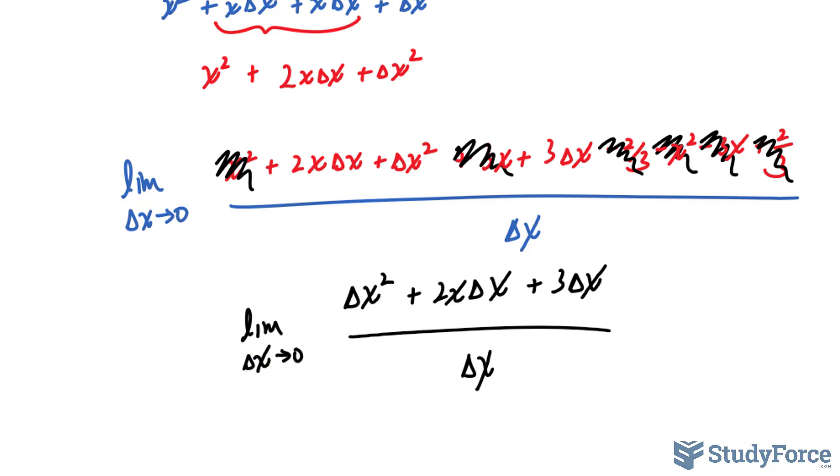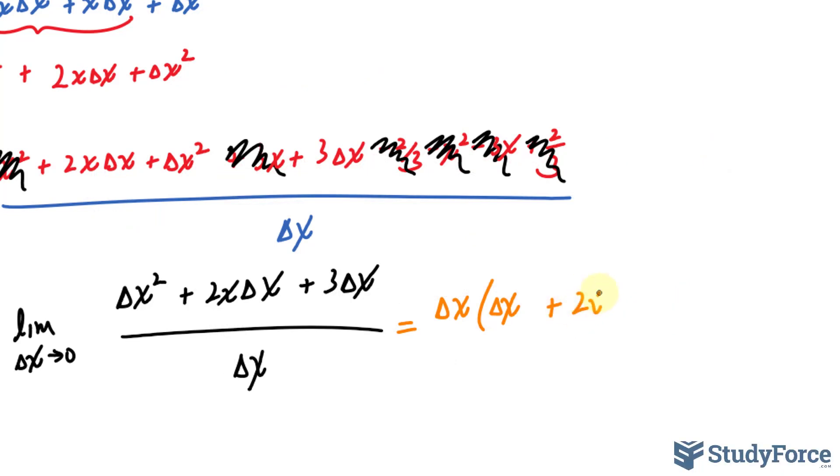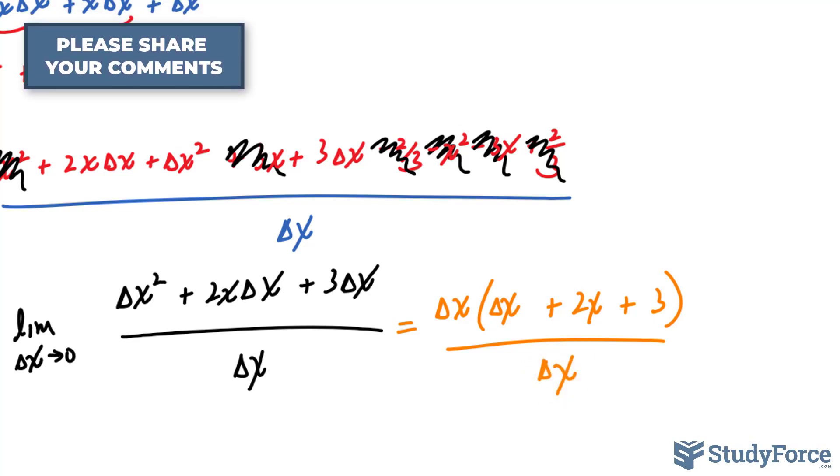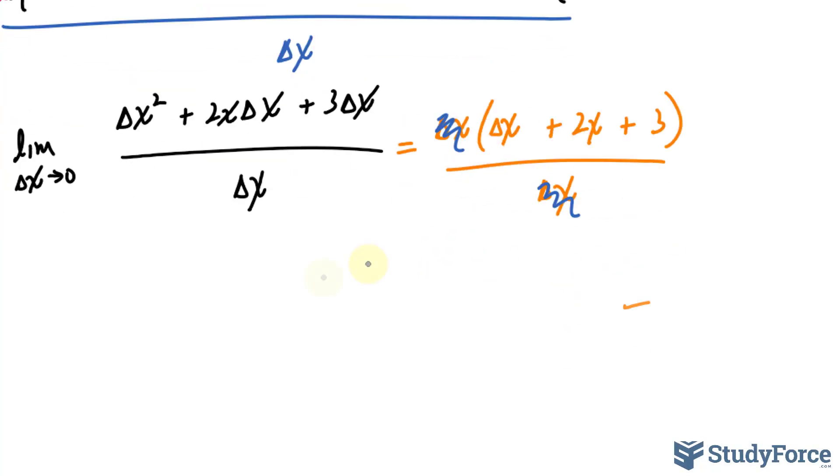So moving forward, we still can't place 0 into delta x unless we factor out at the top a delta x because each of these three terms has one. So this is delta x times delta x plus 2x plus 3 all over delta x. Remember, we haven't officially taken the limit yet. So this part and this part will cancel out and our limit expression should look like this. Limit as delta x approaches 0. We only have the top part to worry about. The bottom is gone.